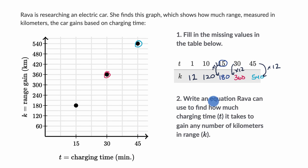All right, now the second part, they say write an equation Rava can use to find out how much charging time T it takes to gain any number of kilometers in range K. All right, well we already established a relationship. We said that K is equal to 12 times whatever T is. That's what we just established in this table up here.